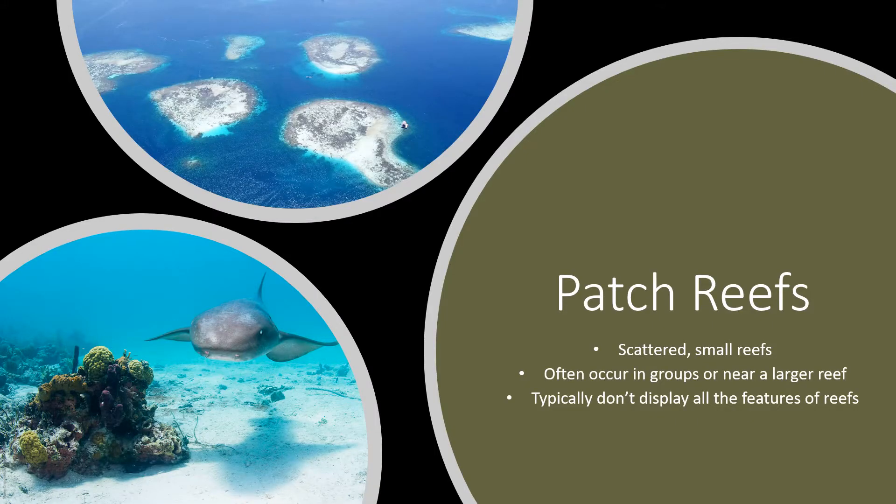Patch reefs, also called table or pinnacle reefs, are small patches of coral that occur on a shelf and may not display all parts of a reef like a lagoon. Patch reefs can be quite small, although it is common for them to grow in the vicinity of a larger, more prominent reef. Most fringing and barrier reefs have patch reefs around them.